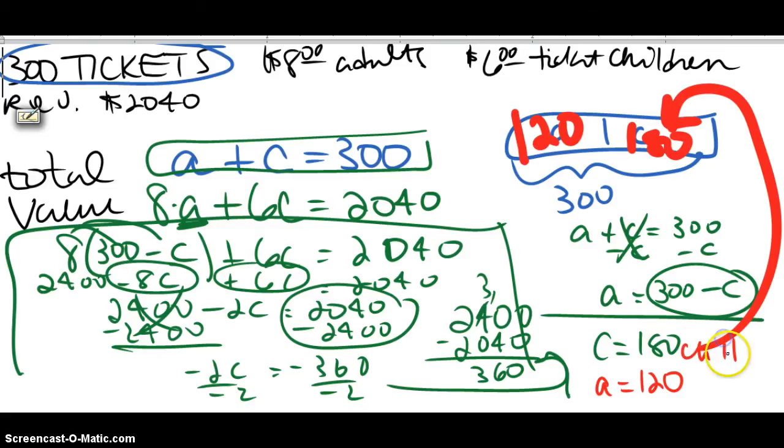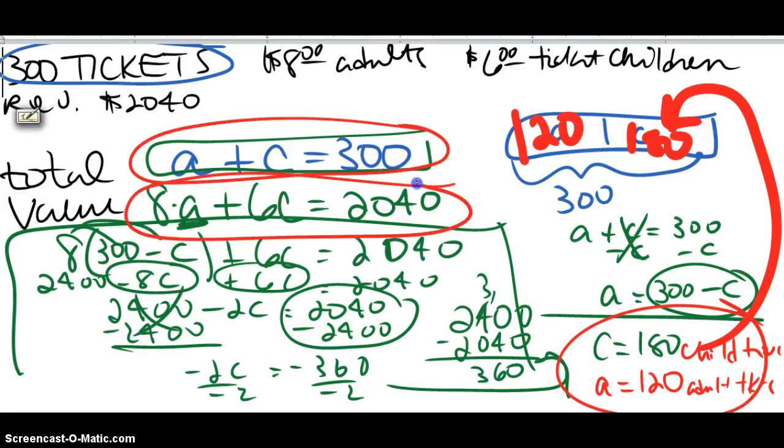So these are children, and those are tickets. And those are adult tickets. All right. And so, again, setting up a total equation and a value equation, and then subbing in the value for one of your variables can help you solve that.